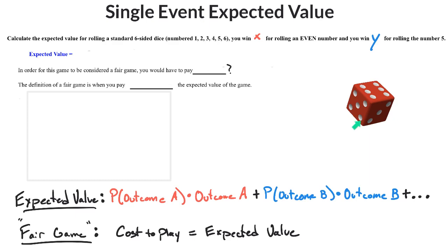There are all sorts of different problems where you have expected value, but in this one you're rolling a standard six-sided die, numbers one through six. You win X dollars for rolling an even number and win Y dollars for rolling the number five.